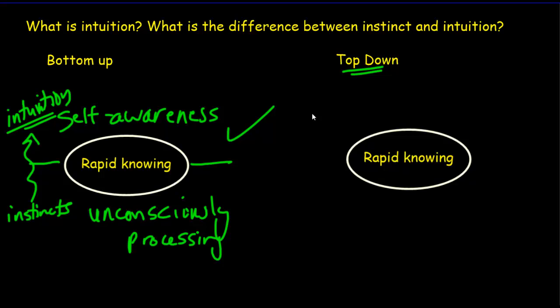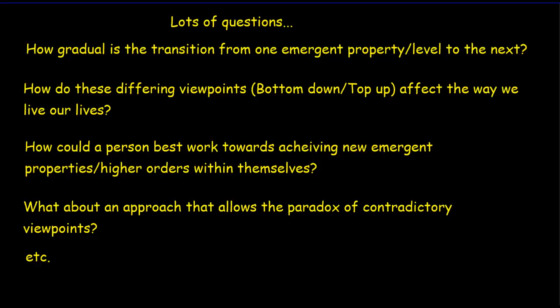Now if you're a top-down person, you're probably going to agree with all of that, but there's something more. There's the possibility that a higher order can provide a rapid knowing. An example might be a person who has an inner knowing the first time they meet their future husband, that that's going to be their future husband. Very difficult to explain this in terms of unconscious processing. A bottom-up person is likely to explain it in terms of fanciful thinking and retrospective thinking, but for a top-down person, it's a higher order achievement and kind of a gift from a higher order that cannot be explained in terms of our previous life experiences.